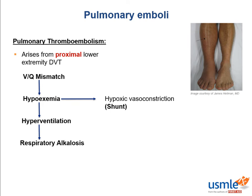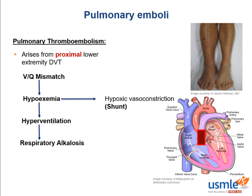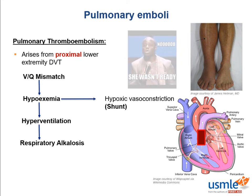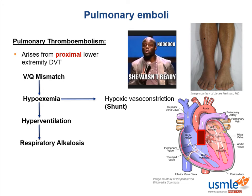These PEs usually happen suddenly. Imagine the right ventricle pumping against the low-resistance pulmonary circulation — until suddenly a large pulmonary embolus is lodged right in front of it. The patient may suffer right heart failure, resulting in hypotension and potentially shock. This type of shock is called obstructive shock, which is why some people with massive PE may present with syncope.